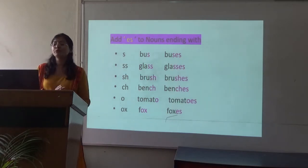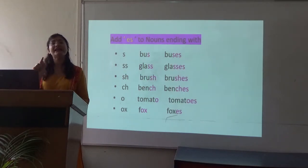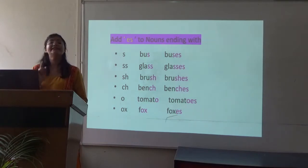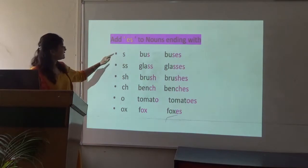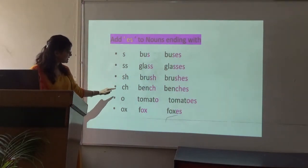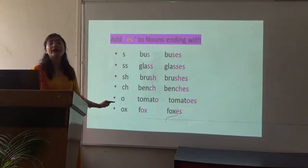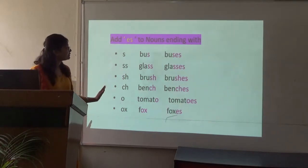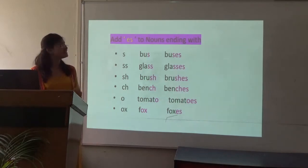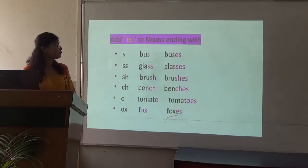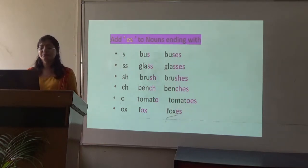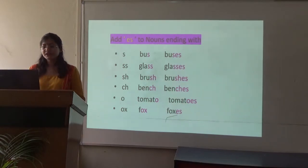Now there are some words whose plural we make by adding -es. The words that end with -s, -ss, -sh, -ch, -o, or -x — we add -es at the end to make their plural. For example: bus → buses, glass → glasses, brush → brushes, bench → benches, tomato → tomatoes, fox → foxes.